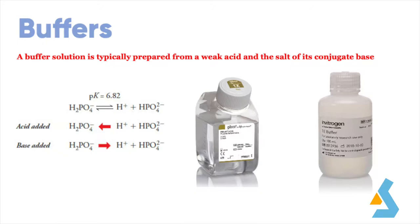Without buffering, fluctuations in pH would alter the ionization state of the molecules under study, which might then behave differently. Before biochemists appreciated the importance of pH, experimental results were often poorly reproducible even within the same laboratory.